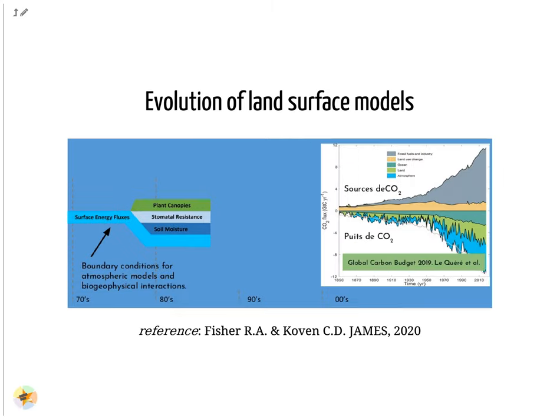The global carbon budget averaged over the last half century is shown on this figure. For this time period, 82% of the total emissions were caused by fossil CO2 emissions and 18% by land use change. The total emissions were partitioned among the atmosphere, 45%, ocean, 24%, and land, 29%, with an unattributed budget imbalance of 2%.